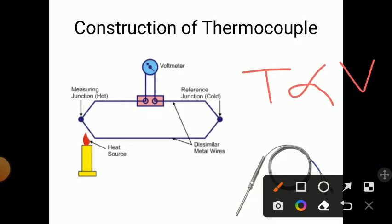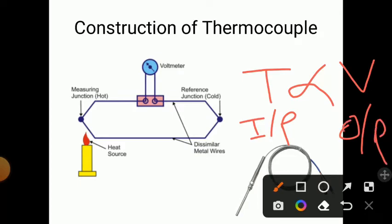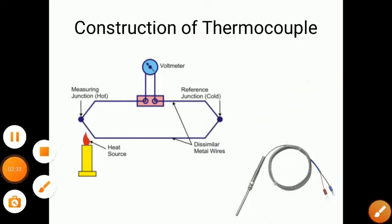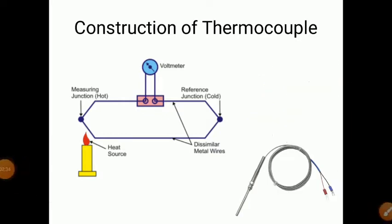As temperature increases at the hot junction, the voltage also increases in the voltmeter — temperature is directly proportional to voltage. The input is temperature change and the output is voltage change. The cold junction is kept at zero degrees Celsius and the hot junction is placed where we want to measure temperature.